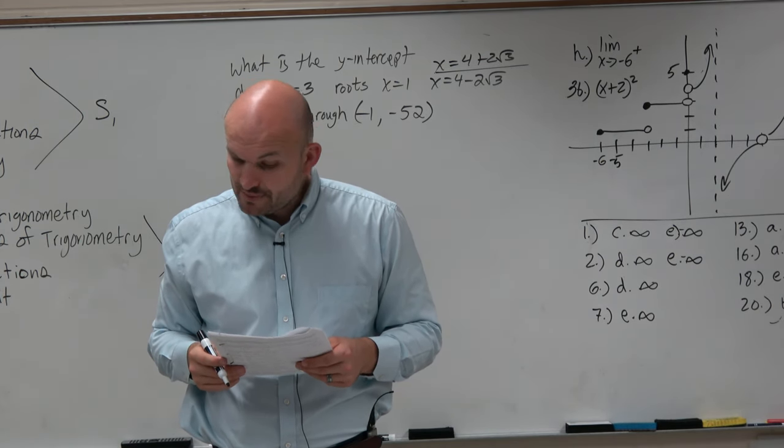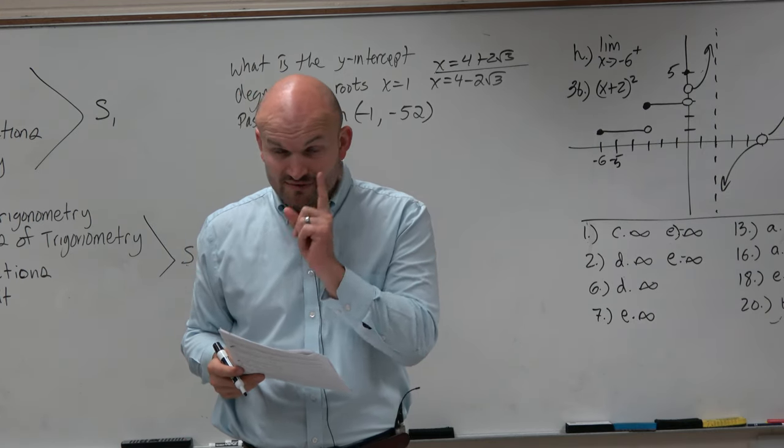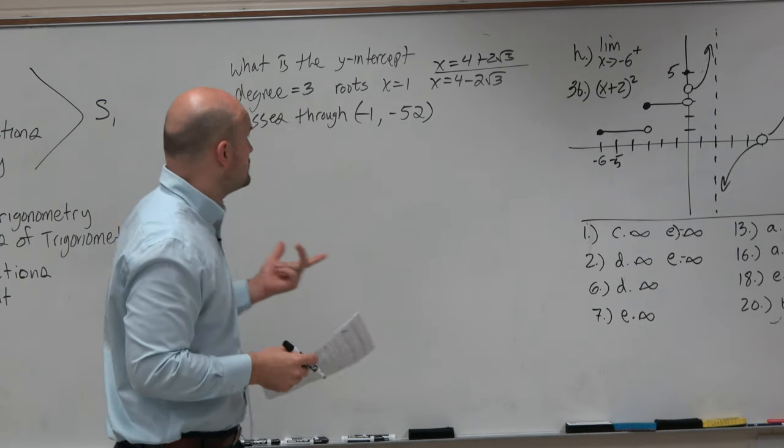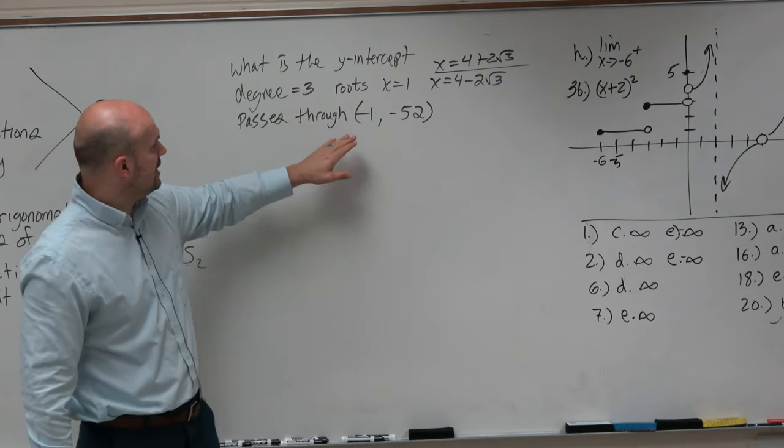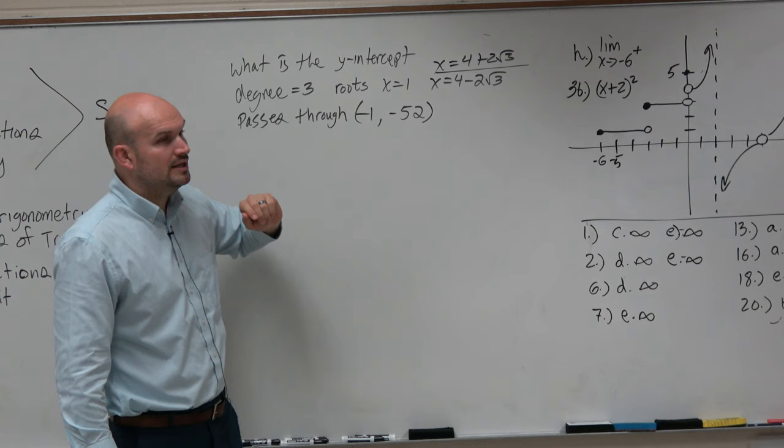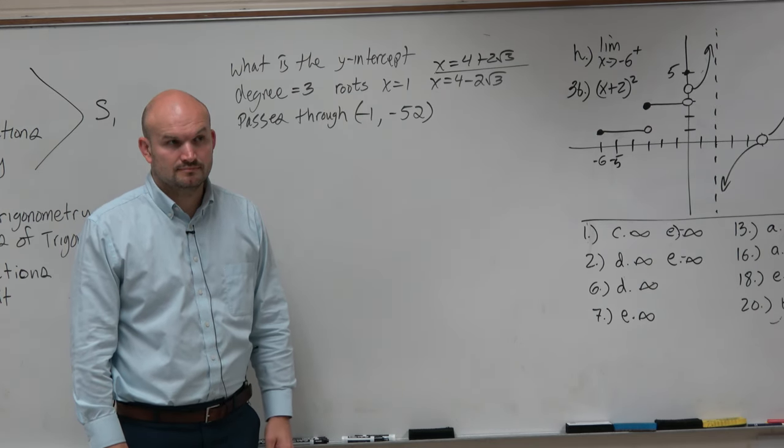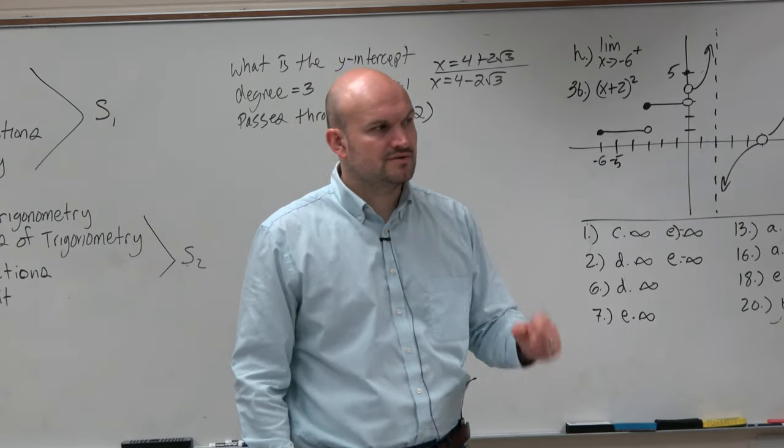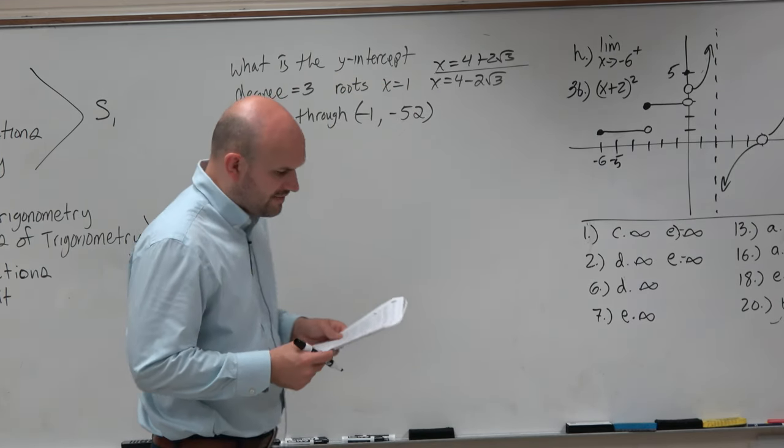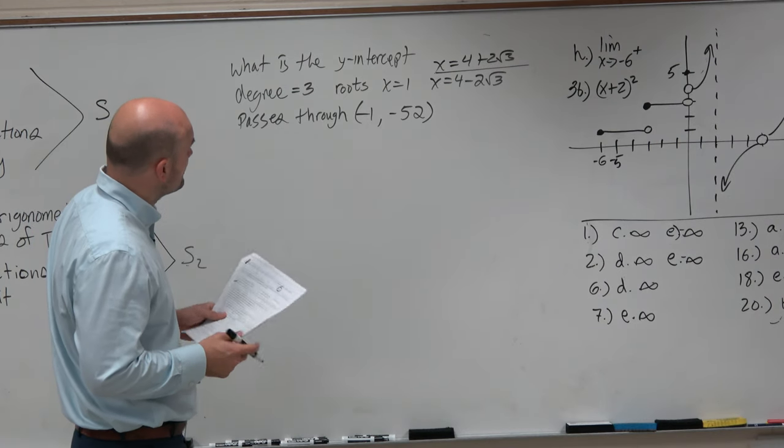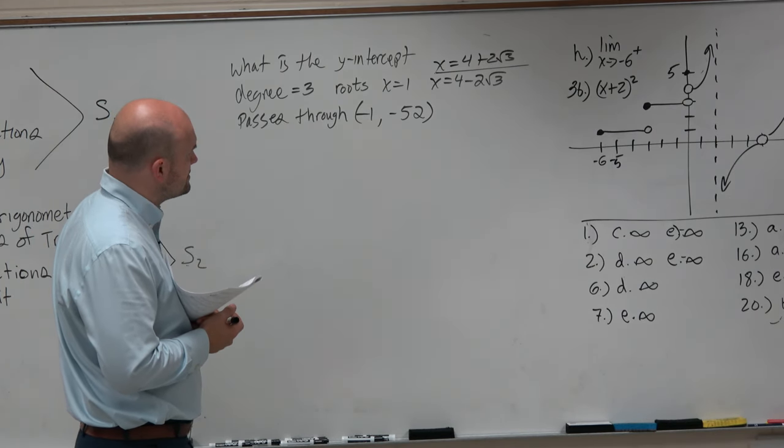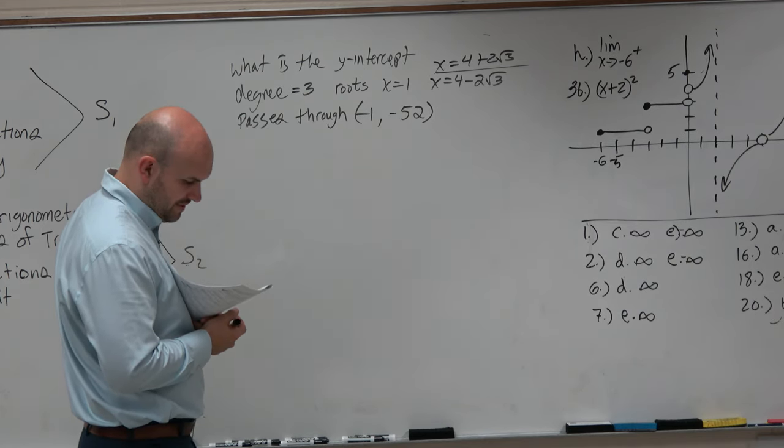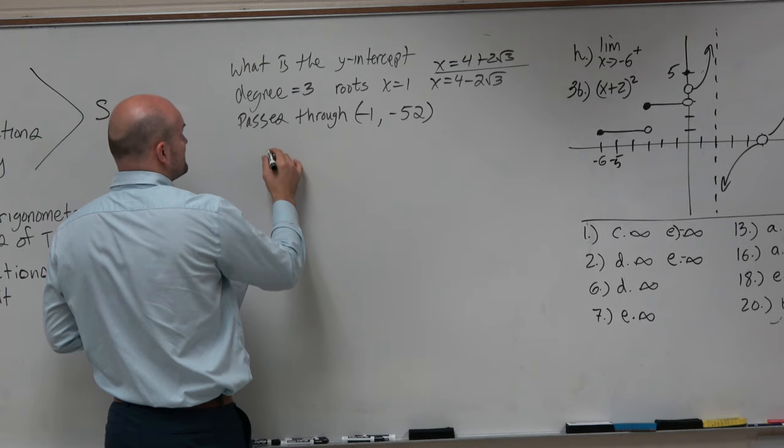And we want to be able to figure out what this polynomial is. And also, they give us one more restriction, that this line also has to go through negative 1, negative 52. So that's an interesting take here. And we'll talk about how that can be applied. So first of all, if we have our roots, that means we can write them as factors.